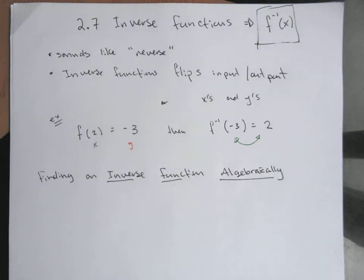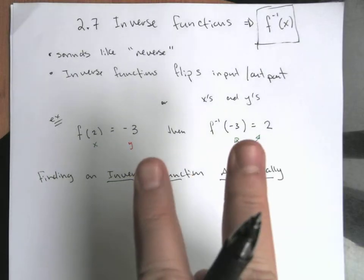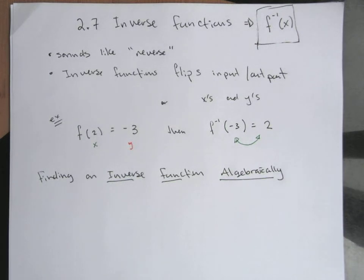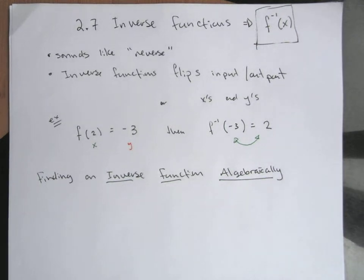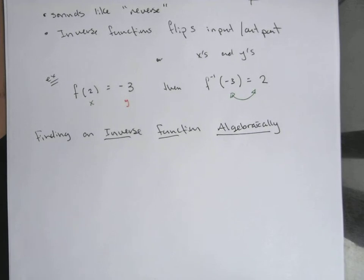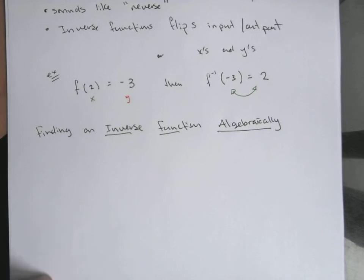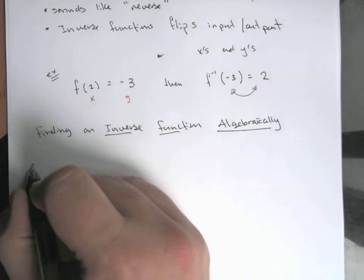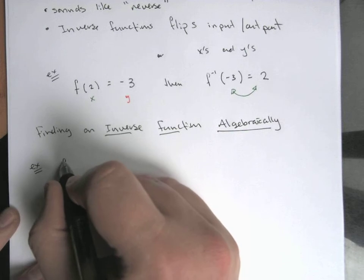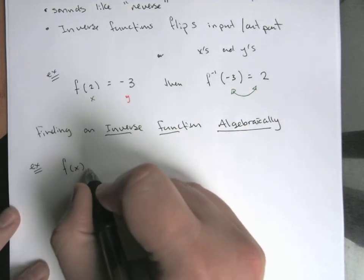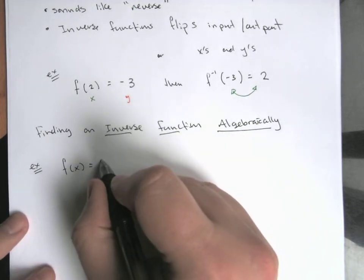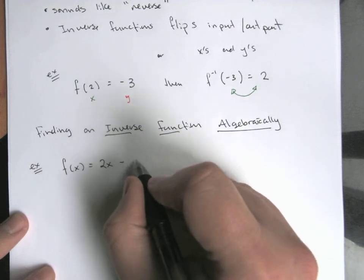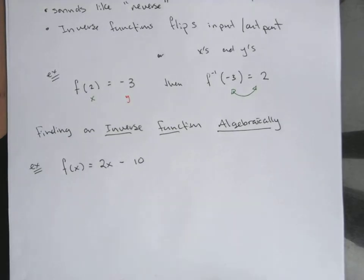Obviously you could look at graphs for these things, there's lots of different ways you can do it. If you have x-y coordinates you can just flip the roles around, flip the positions of the x's and the y's. But if we have a formula we'd like to know what the inverse formula is going to be, what's the reverse function going to look like. So let's start with a pretty simple example: f(x) equals 2x minus 10.